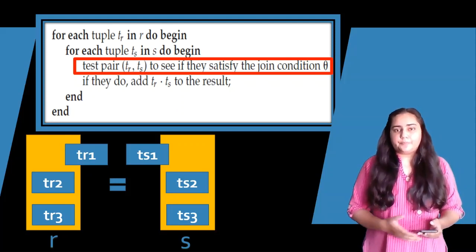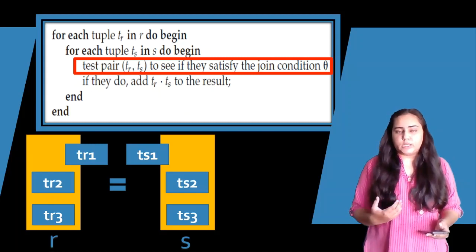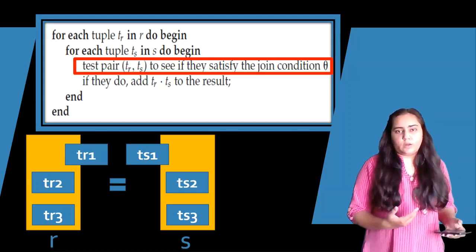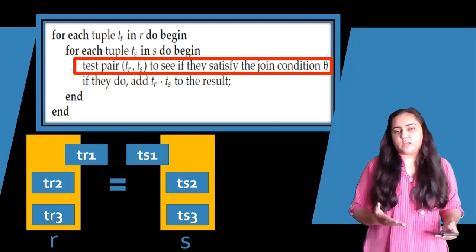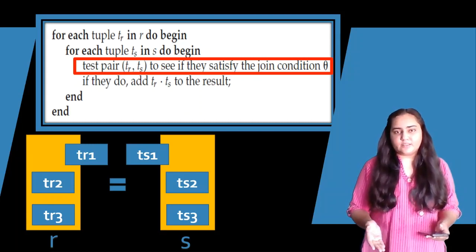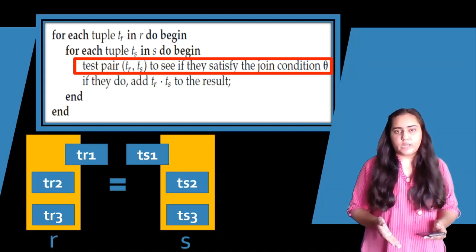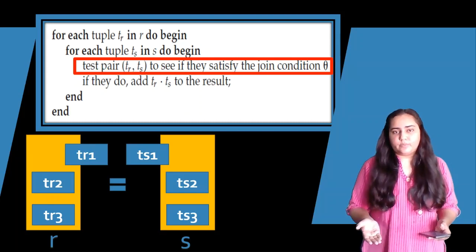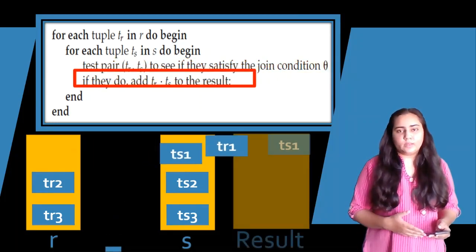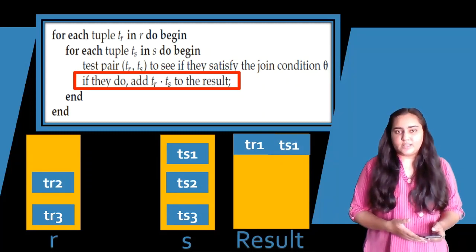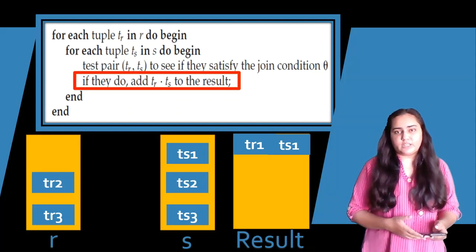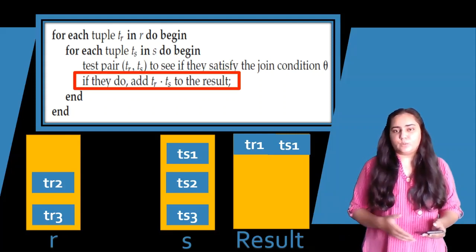This join condition theta could be anything — for example, matching one column of R with a column of S, or checking if one column of R is greater than another column of S. Let's assume the condition is equal to. Out of TS1, TS2, and TS3, suppose only TS1 matches TR1. So TR1 equals TS1, and we add the pair TR1, TS1 into the result.